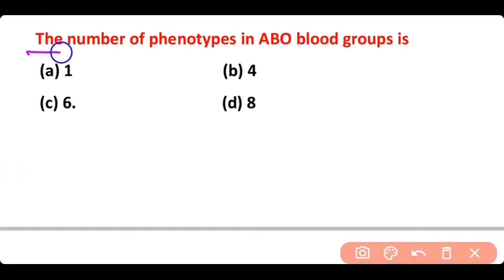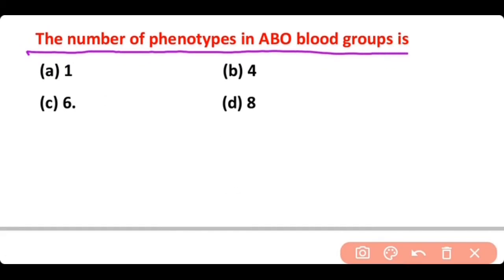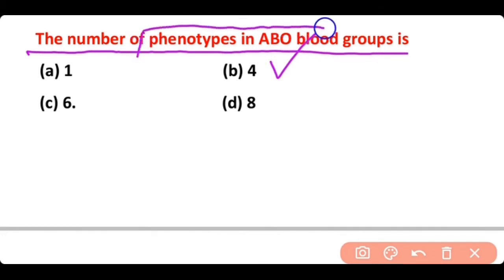The number of phenotypes in ABO blood groups is: 1, 4, 6, or 8. The correct answer is option B. The number of phenotypes in ABO blood groups is 4, while the genotypes are 9 in total.